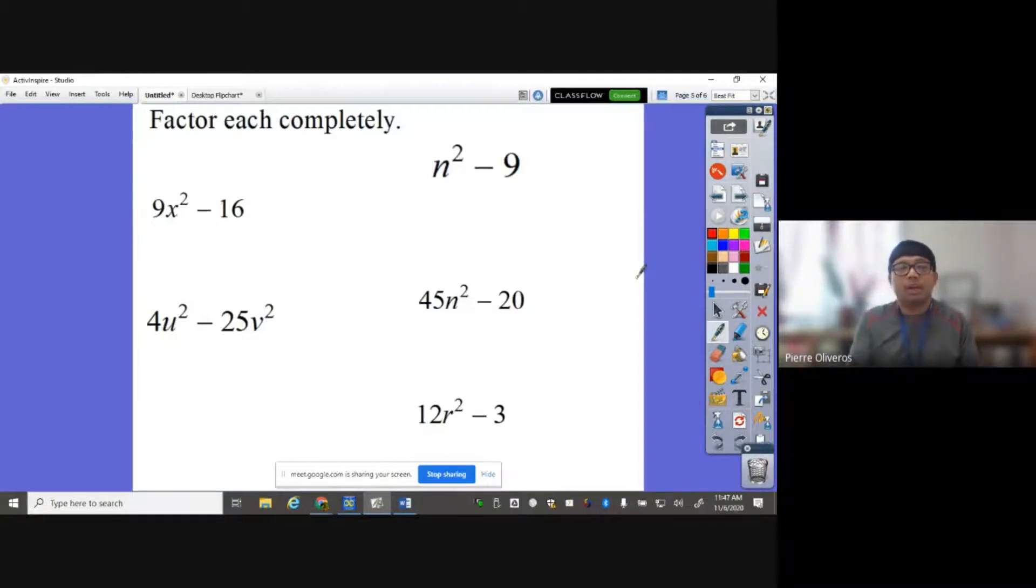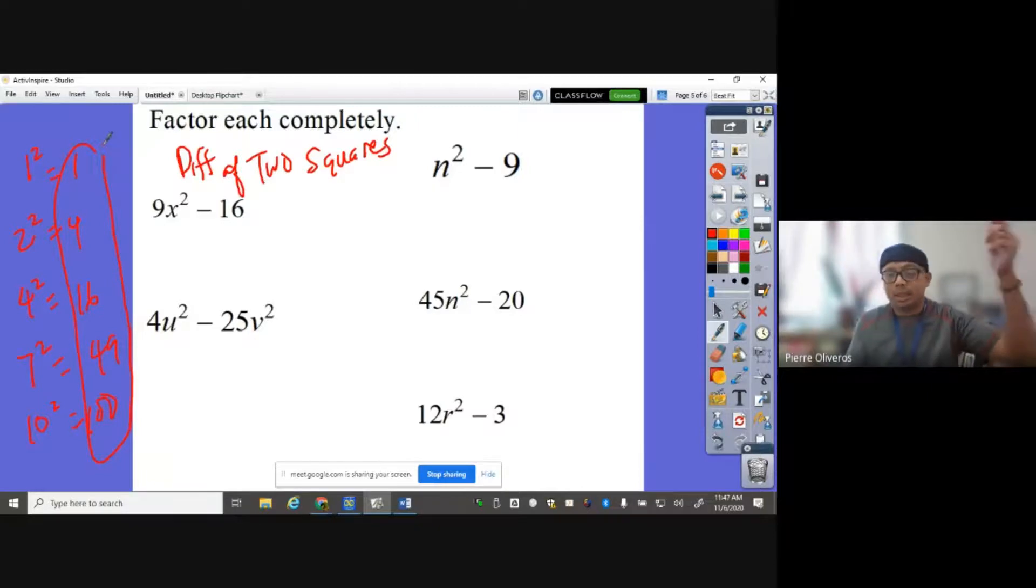So anyway, let's go ahead now to difference of two squares. From the word difference, that means you're going to subtract two things that are squared. Squared are like 1 squared is 1, 2 squared is 4, 4 squared is 16, 7 squared is 49, 10 squared is 100. These are the perfect square numbers. There are more here: 121, 9, 36, and so on and so forth.